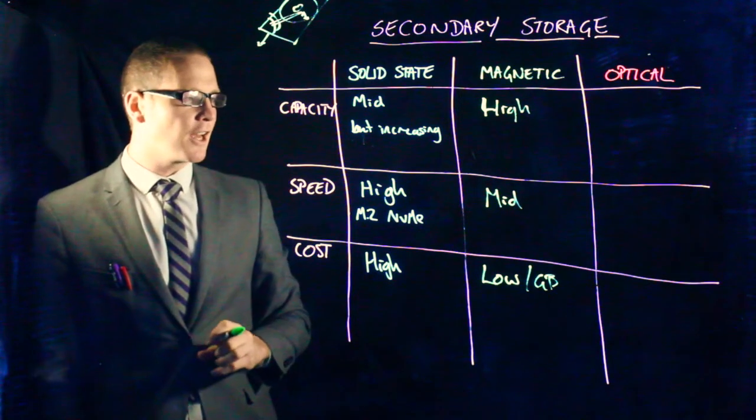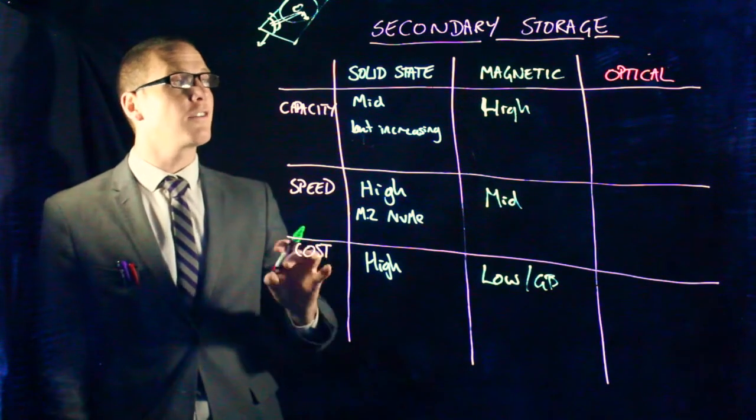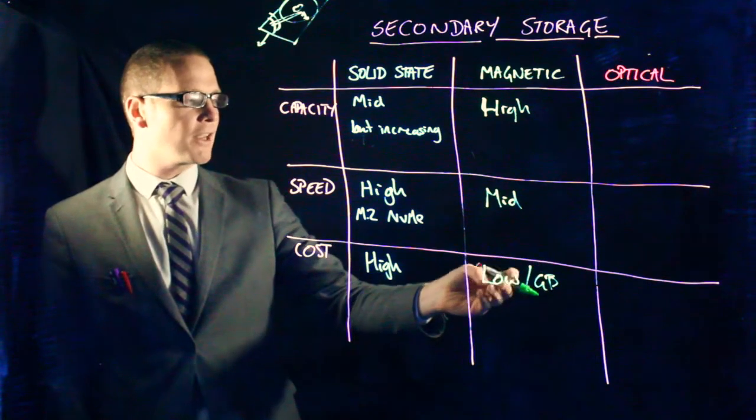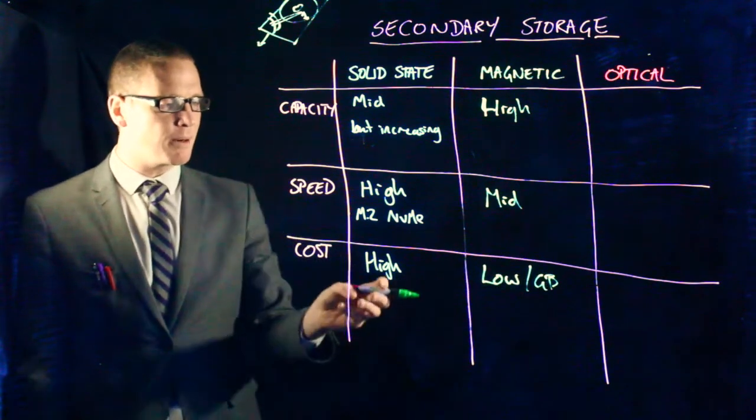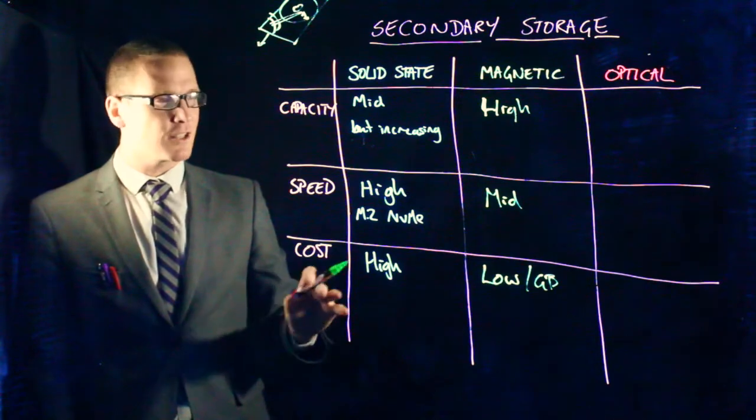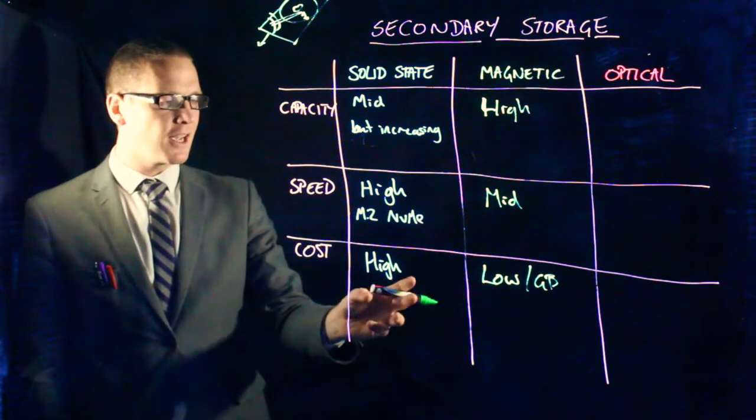So it's a factor of about three and a third, a factor of three cheaper per gigabyte than a low end, so not even a high speed SSD.